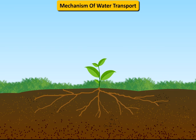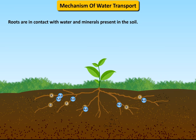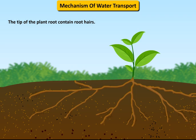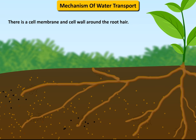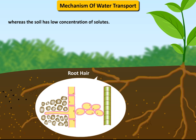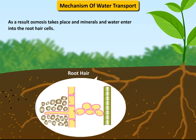Roots are in contact with water and minerals present in the soil. The tip of the plant root contains root hairs. There is a cell membrane and cell wall around the root hair. The root hair cells have higher concentration of solute within them, whereas the soil has low concentration of solutes. As a result, osmosis takes place and minerals and water enter into the root hair cells.